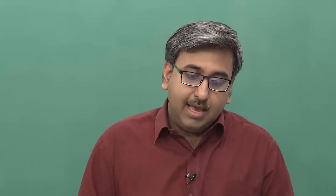The European District Commissioner takes a very strong view of this arson case. As the second point on this slide suggests, he arrests the leaders of Umuofia and humiliates them by putting them in jail. After the release of the leaders, Okonkwo takes decisive action against this incursion of colonial authority into traditional village life — he kills the leader of the court messengers who had come to the people of Umuofia as representatives of the European District Administration. But what Okonkwo fails to do is enthuse his fellow villagers to wage war against the white man's authority. And finally, failing to do so, he commits suicide.